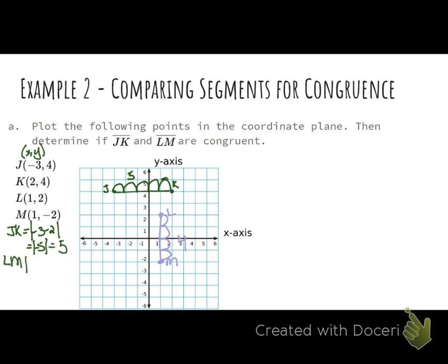We have LM. Here we see the x values are the same. The y values are what are different. I can do that subtraction there. 2 minus negative 2 absolute value around them. Minus a negative becomes a plus. So 2 plus 2 is 4. Those are just two different ways to look at this and to see it.